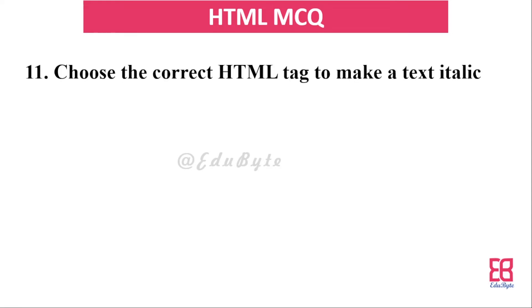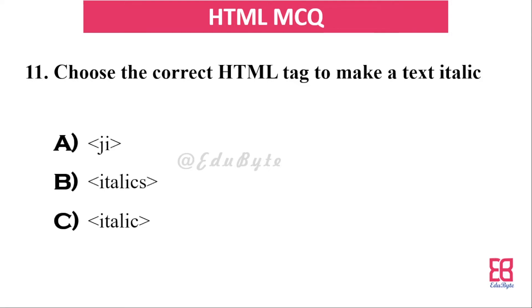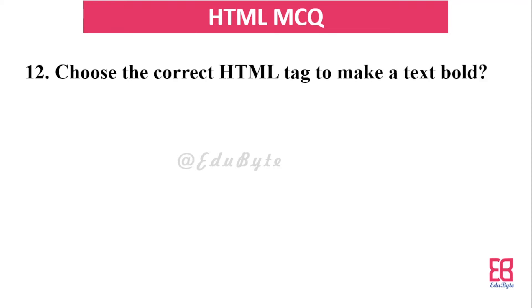Question nine: what is the correct HTML tag to make text italic? The correct answer is `<i>` — the `<i>` tag is used to make text italic.